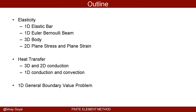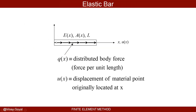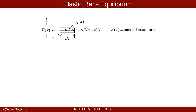Let's look at the 1D elastic bar. An elastic bar can only stretch — that's all it can do — making it suitable for modeling a truss. You can also specify a modulus that varies as a function of axial position, the cross-sectional area can also vary, and you can have a distributed load. u(x) is the deflection of the material point originally located at point x — it tells you how much that point moved to the right.